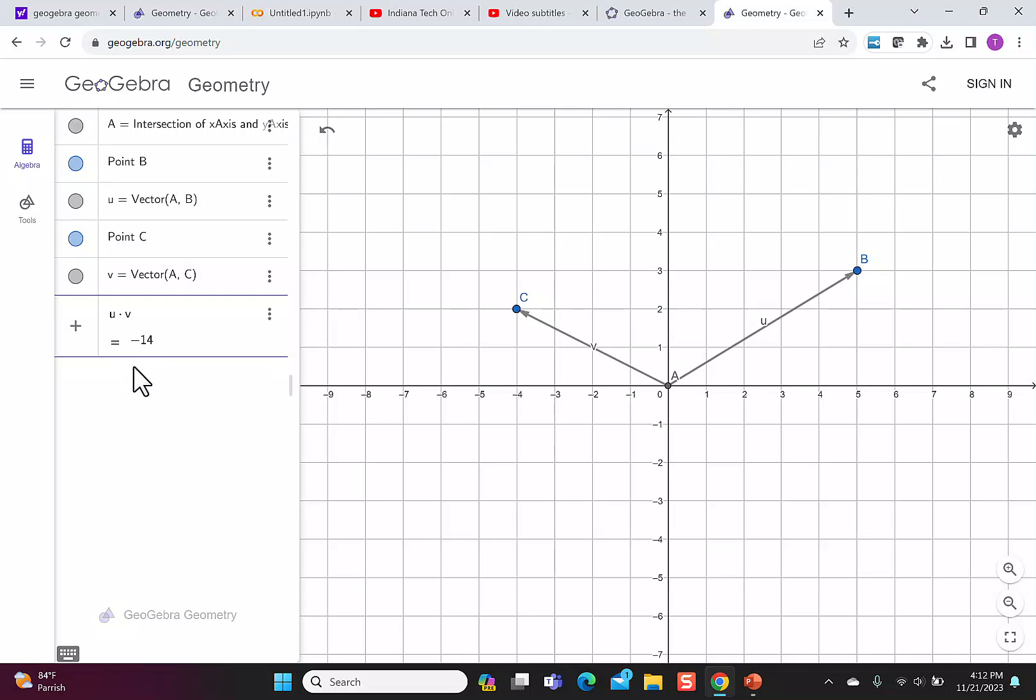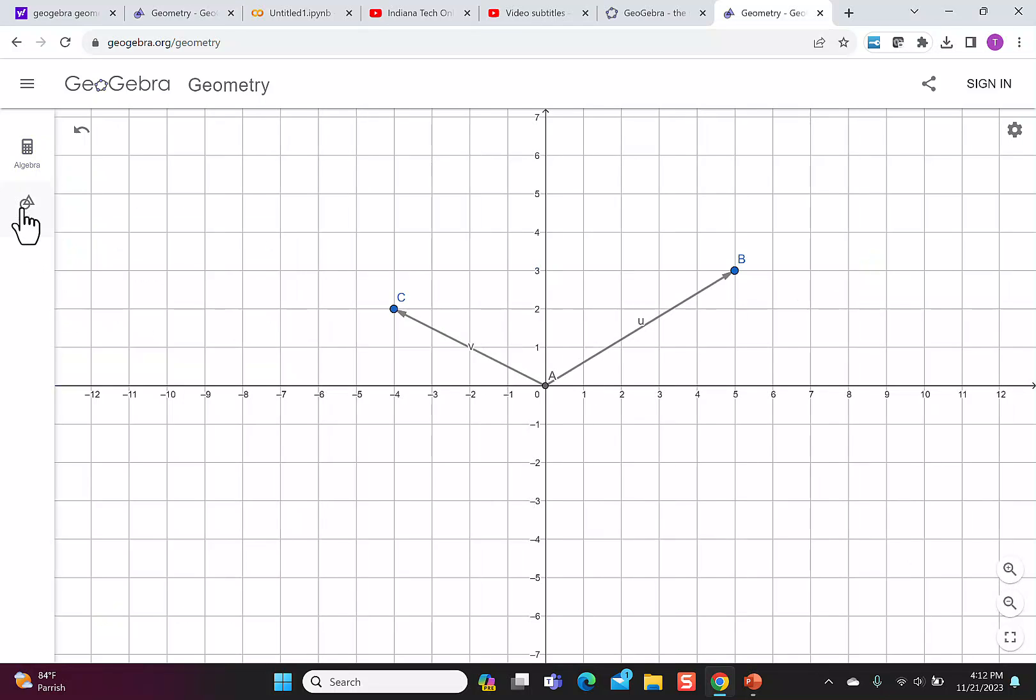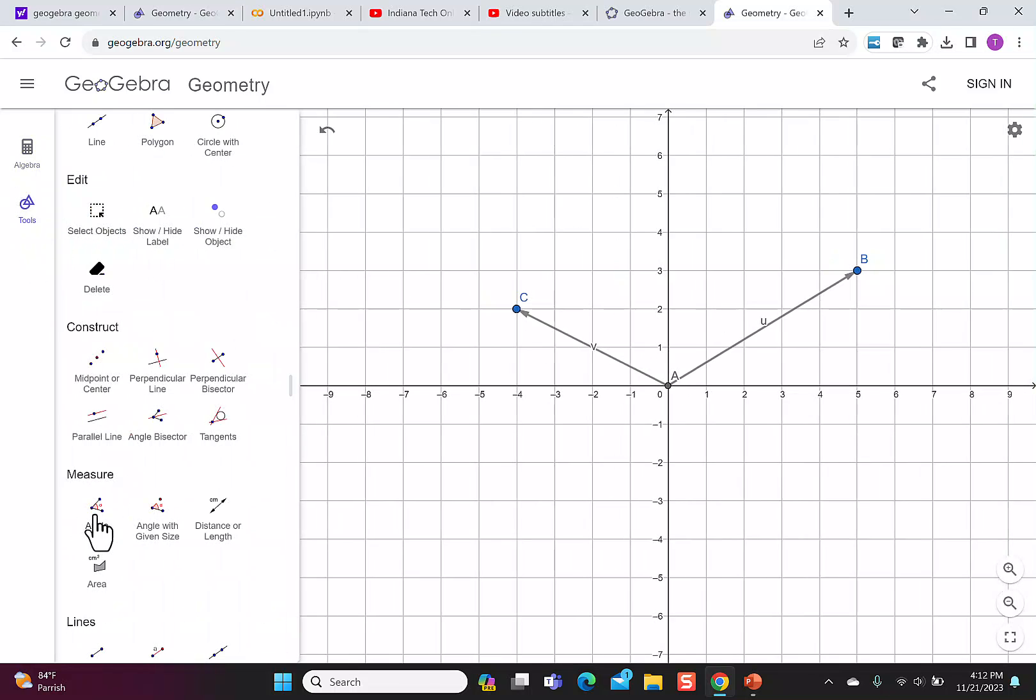I can also find the angle between the vectors. To do that, I go back to my tools. And what I'm looking for here is measure. So I want to measure an angle. The angle I want to measure is A. So I want to go from the point B to the vertex A and then over to C.